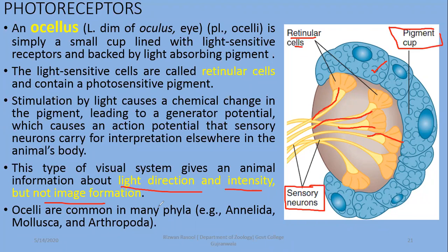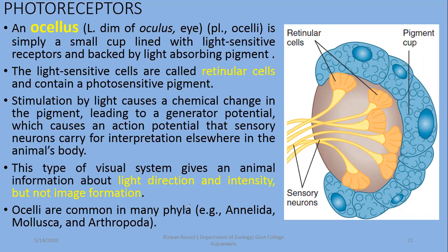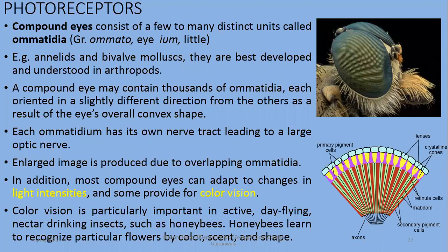Ocelli are commonly found among different invertebrate groups, for example annelids such as earthworms and leeches, mollusca such as snails, and arthropoda. Ocelli cannot form images; they are used only for light detection.